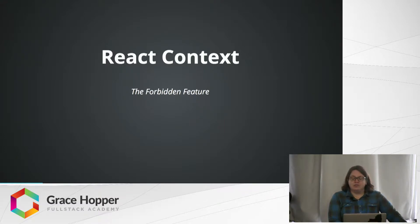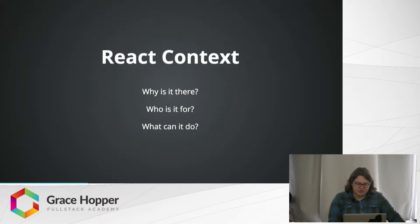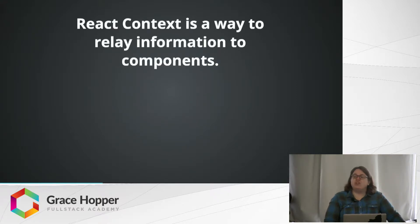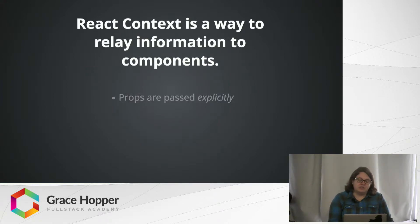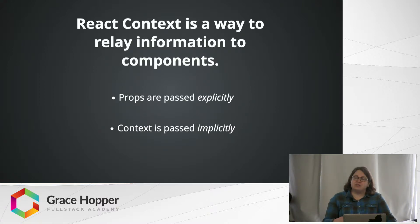Over the course of this talk, we are going to cover why React context is there, who it is for, and what it can do. React context is not at all the same as the context of a function in JavaScript. It has nothing to do with the idea of the this keyword. It is particular to the React library. React context is a way of relaying information to components. It actually works very much like props in that both are objects that store data that can be accessed from within various React components.